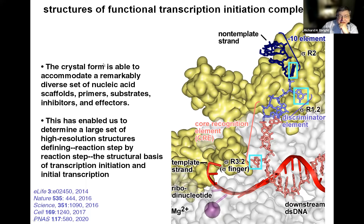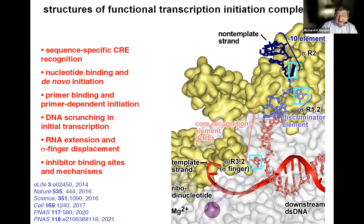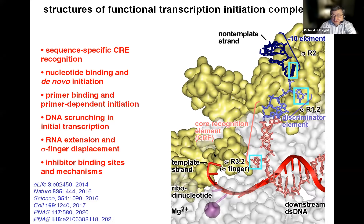The crystal form that yielded these two structures was able to accommodate a remarkably diverse set of nucleic acid scaffolds, primers, substrates, inhibitors, and effectors. This has enabled us over a series of subsequent publications to determine a large set of high-resolution structures that define, reaction step by reaction step, the structural basis of transcription initiation and initial transcription—including sequence-specific recognition of the core recognition element, nucleotide binding in de novo initiation, primer binding in primer-dependent initiation, DNA scrunching in start-site selection and initial transcription, RNA extension driving the sigma finger from the active center, as well as inhibitor binding sites and mechanisms.